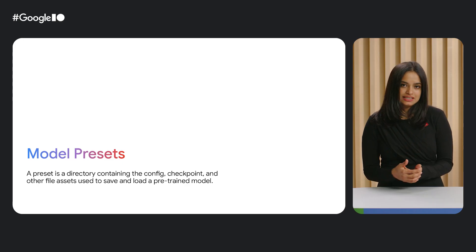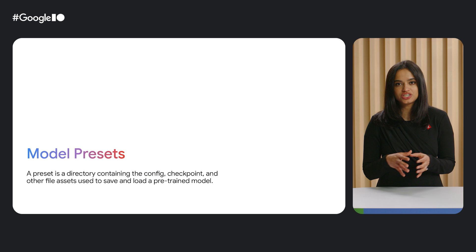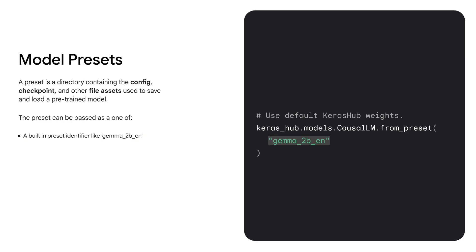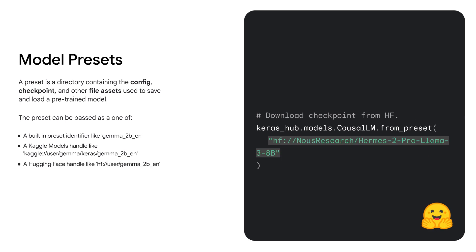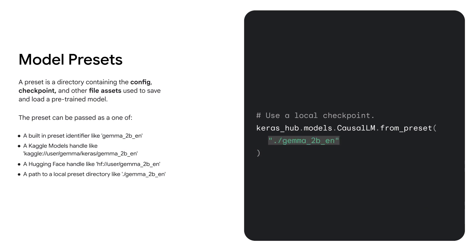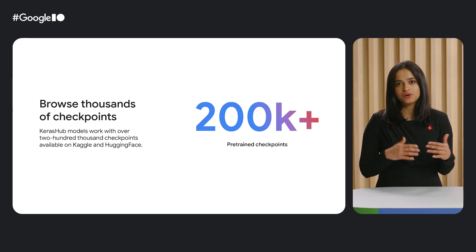Now let's learn about model presets. A preset is a neatly packaged directory containing everything needed to load a pre-trained model: config, checkpoints, and any extra files. You can access presets in several ways. You can use a built-in identifier like Gemma 2B EN as shown here. You can also load a model from a Kaggle URL — note that the model does not have to be from a Keras Kaggle organization, it can be from any user. And same with Hugging Face — here we are showing one from new research. You can also load a model stored locally. And if you choose to not use a predefined preset, you can always build a custom model with custom configs. Thanks to its Kaggle and Hugging Face integrations, Keras Hub models work with over 200,000 checkpoints. You can use any Hugging Face Transformer checkpoint with model architectures implemented in Keras Hub.